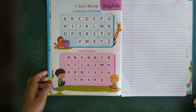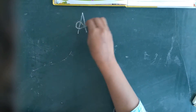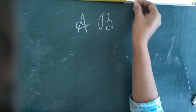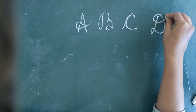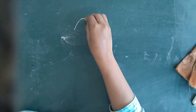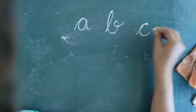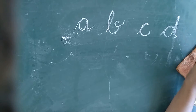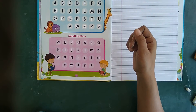Capital letters like A, B, C. These letters are capital letters. Small letters. There are 2 forms of Alphabet: capital letters and small letters.